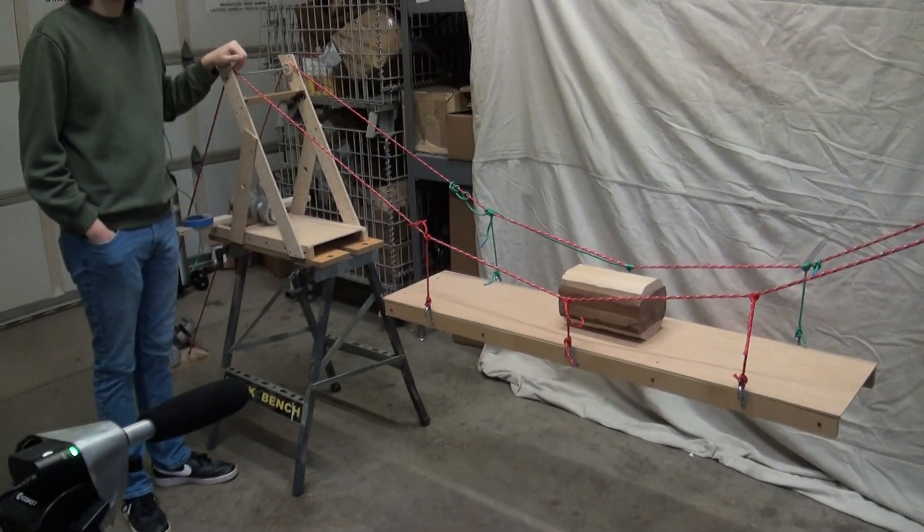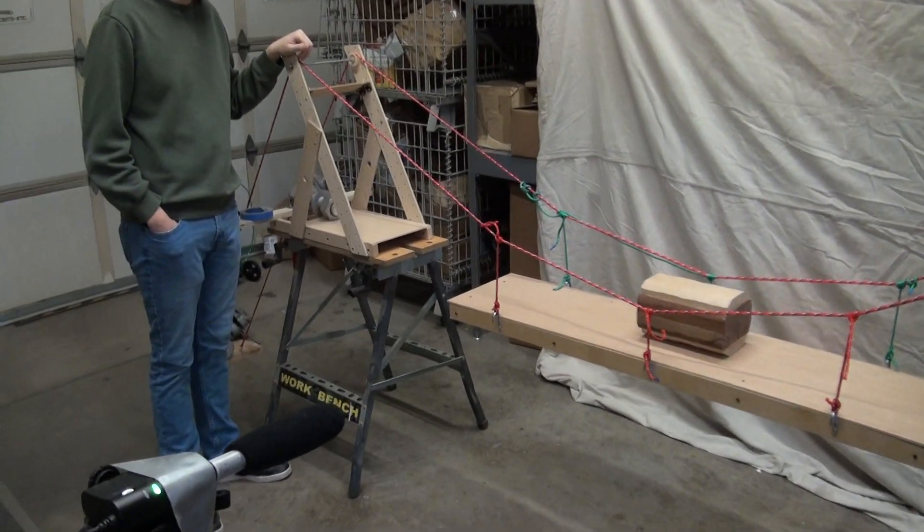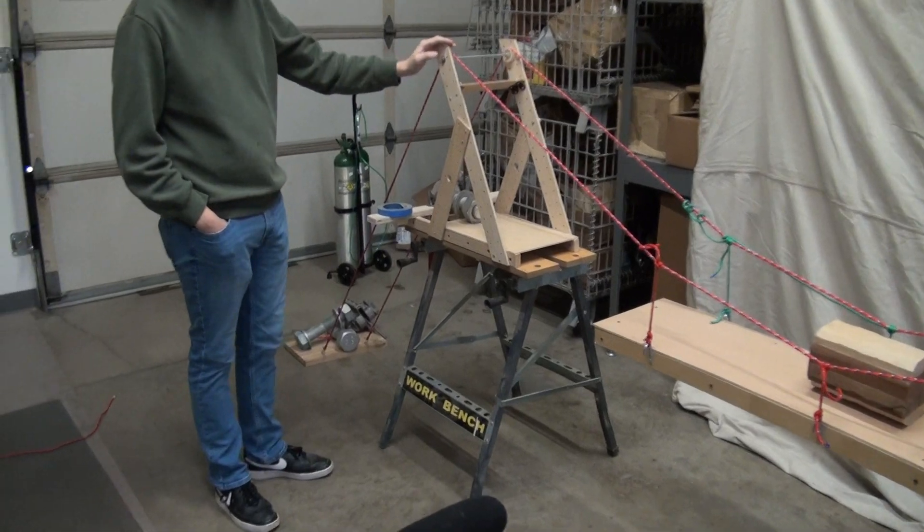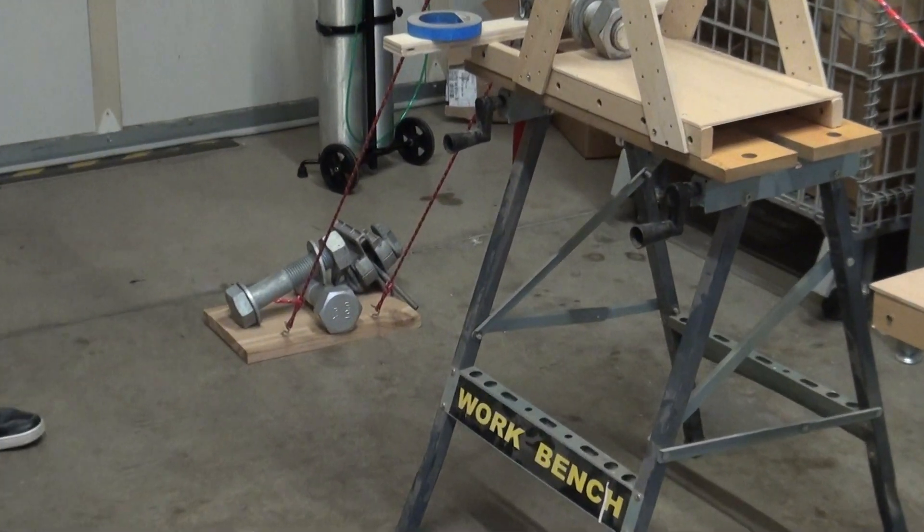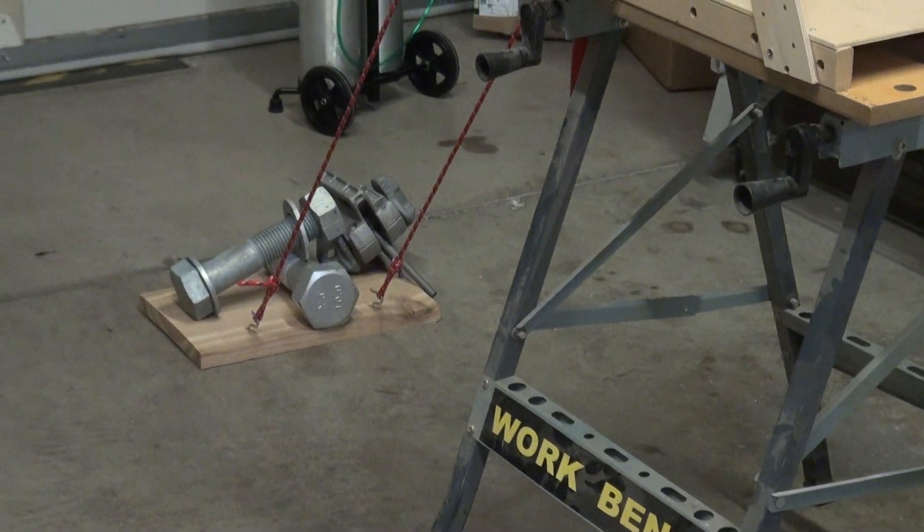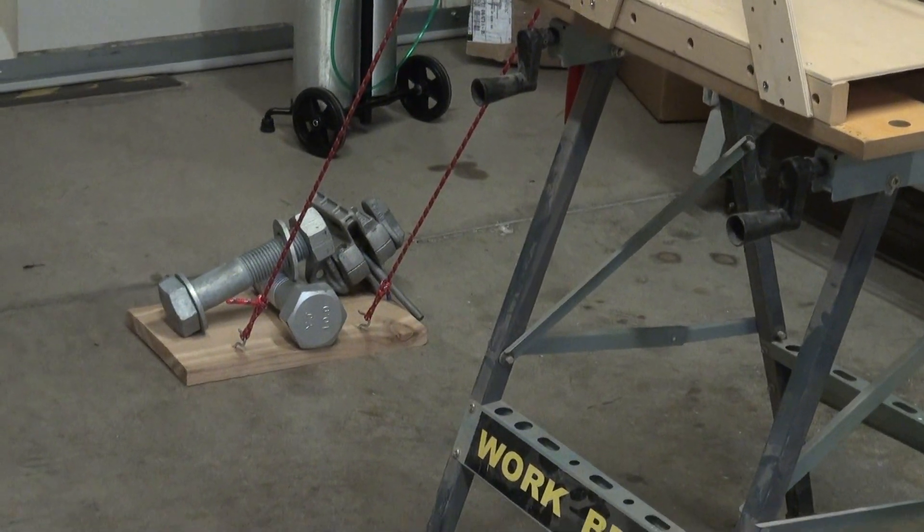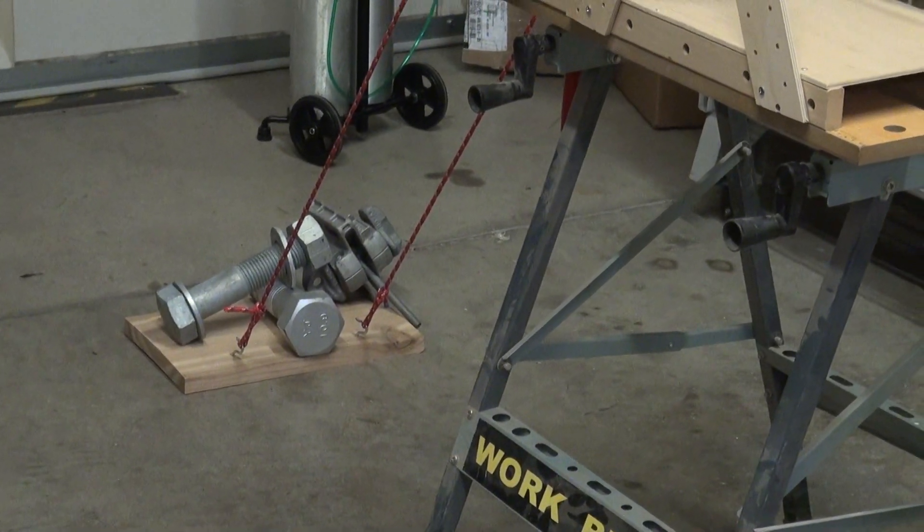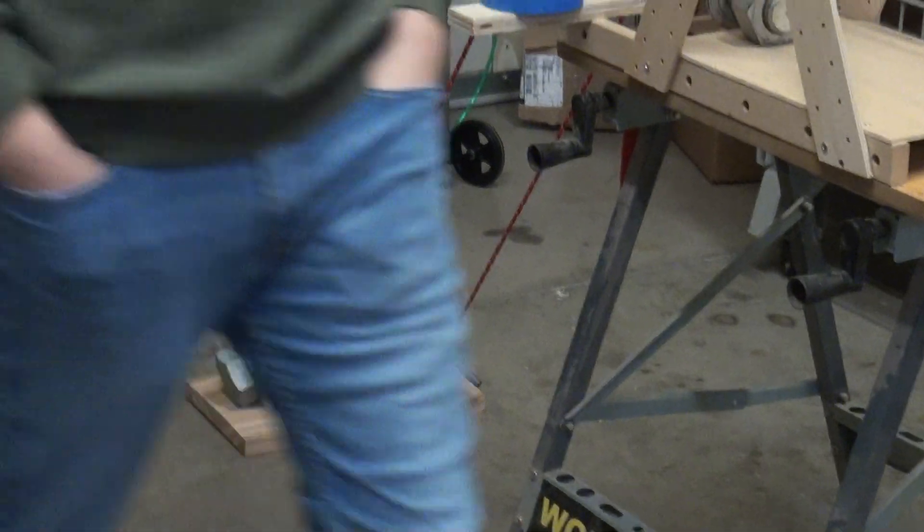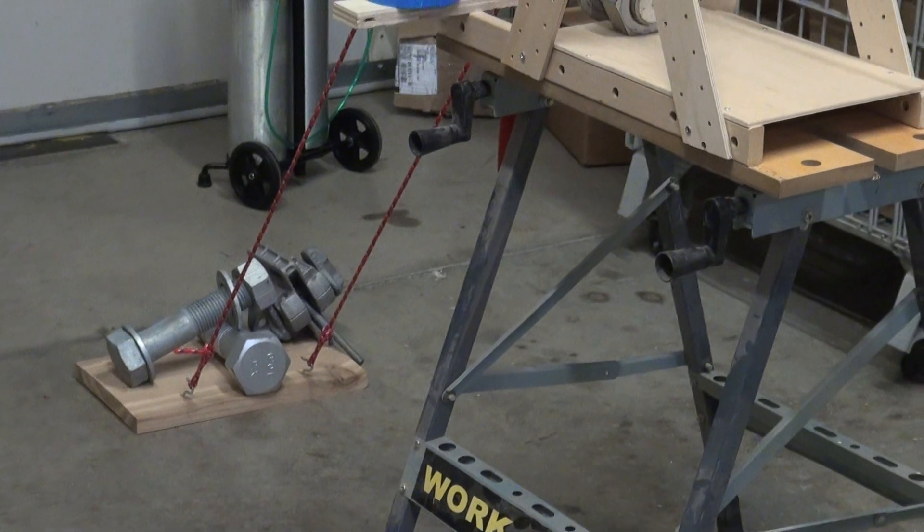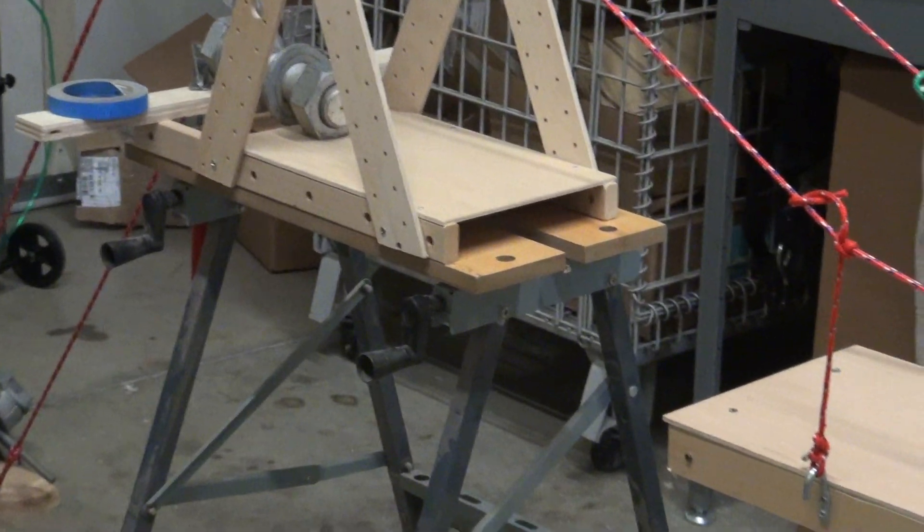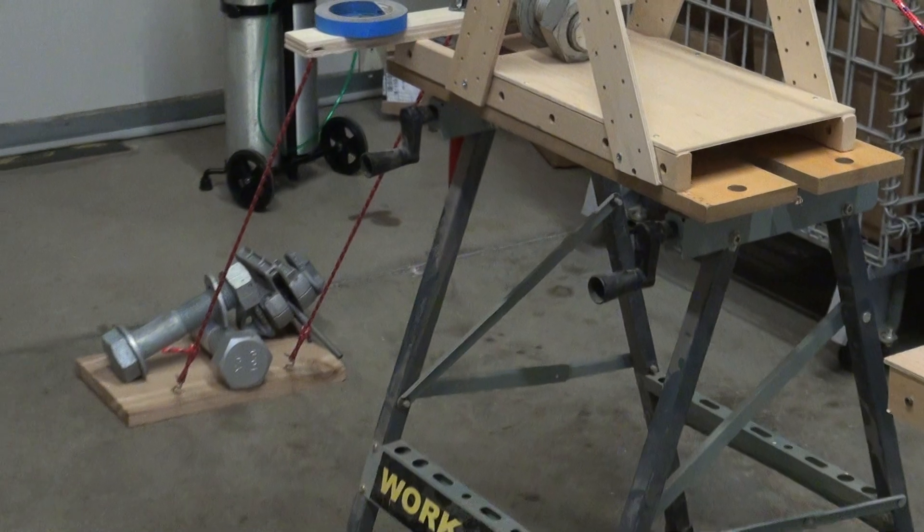Now what would happen if, let's see, that anchorage over there? It's about 30 pounds sitting on a piece of plywood. The plywood sits on a smooth concrete floor, so it could slide easily. So if we took a couple more bricks down here and added that to the... hold on, let me get a close-up.